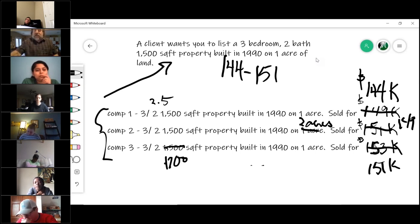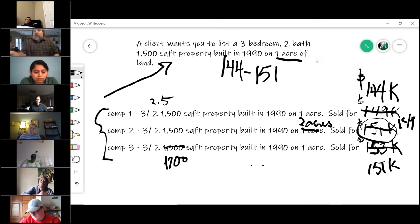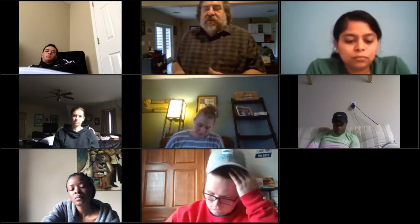So if it's sitting on two acres and sold for $149,000, what would our property sitting on one acre sell for? The answer is less than $151,000. It sold for $151,000, but it was on two acres. Ours is only on one acre. So we have to bring what this would have sold for if it was sitting on one acre, so we lower the value.